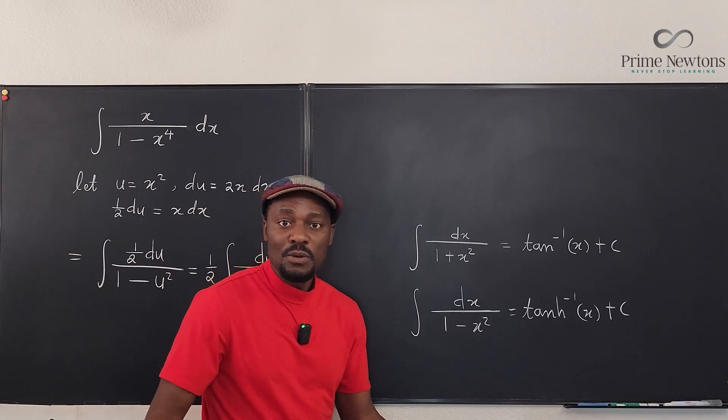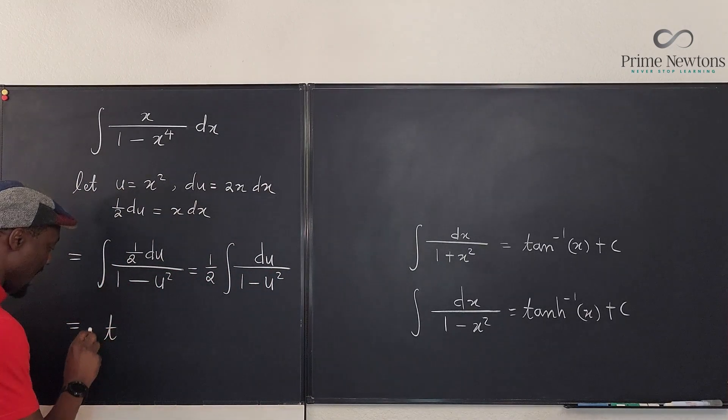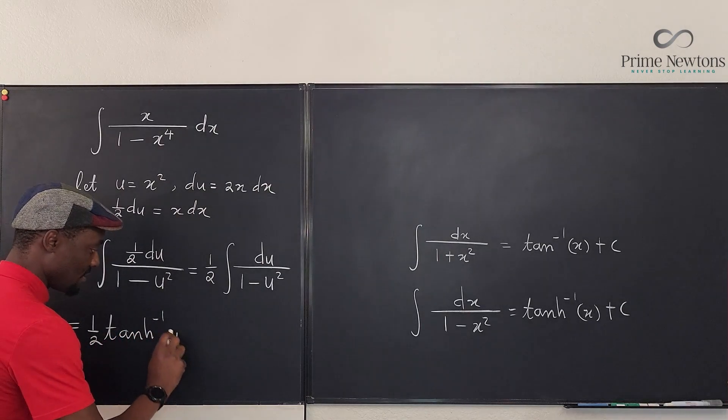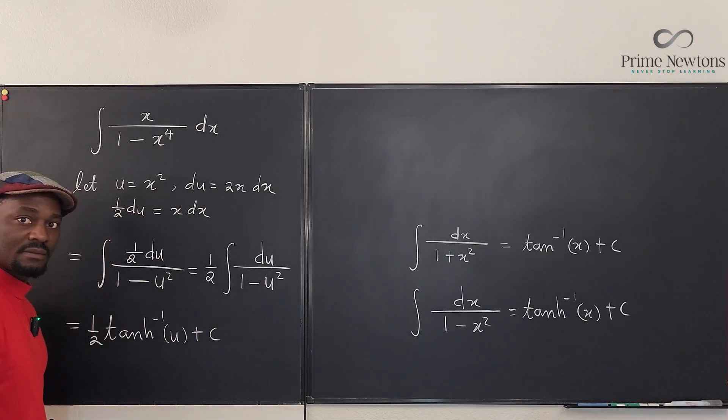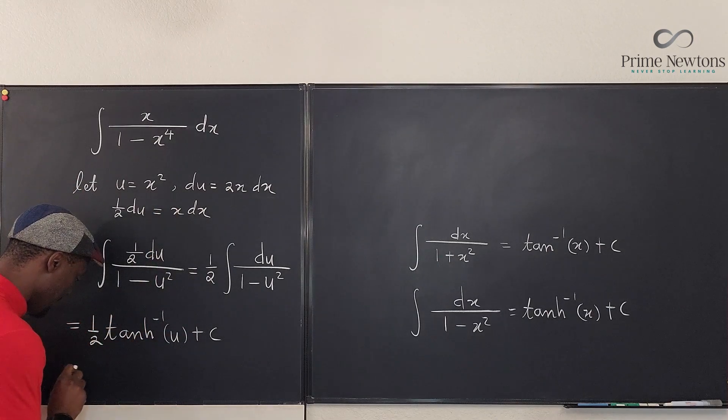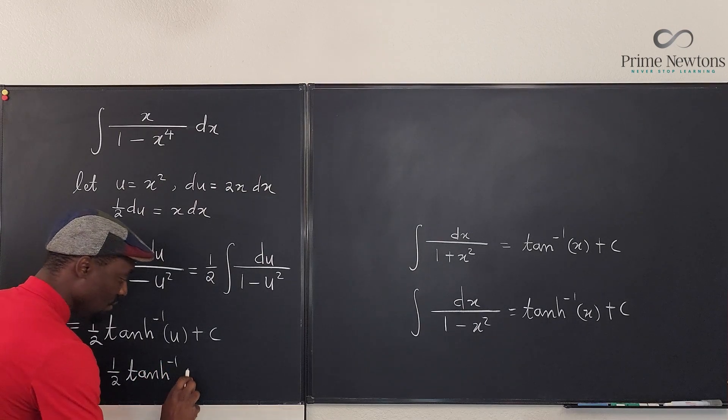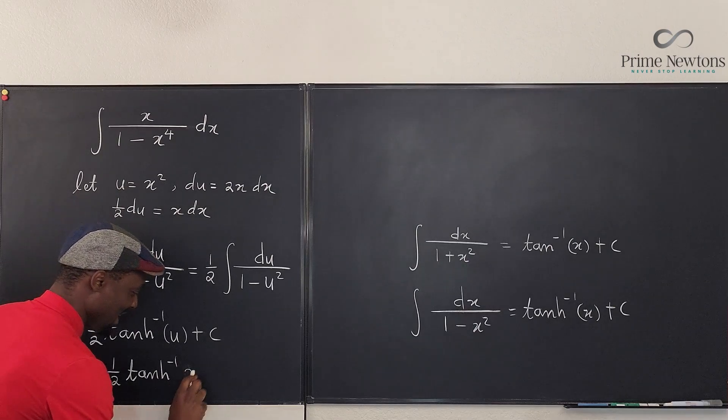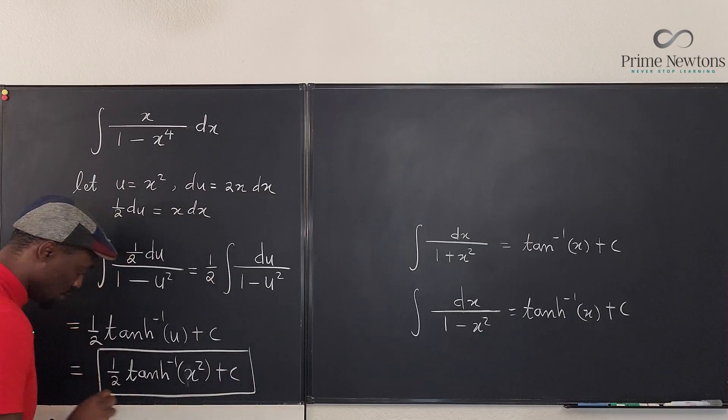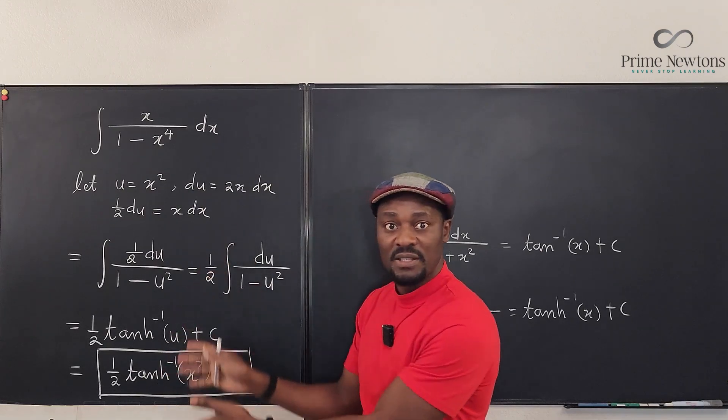So what should we do? Just write your answer here. This is equal to ½ tanh⁻¹(u) + C. And if we choose to replace this u with x², our final answer is ½ tanh⁻¹(x²) + C. This is where you should stop your work, but if you don't know this then you have to do partial fraction decomposition.